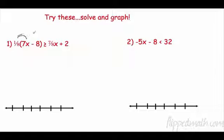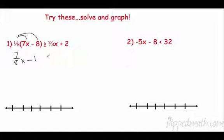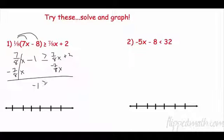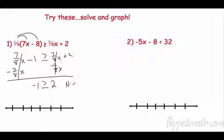I need to distribute 1/8. One-eighth times 7 is 7/8 x, and one-eighth times 8 is 1. So: 7/8 x + 1 ≥ 7/8 x + 2. Subtract 7/8 x from both sides — that cancels — leaving negative 1 ≥ 2. Is negative 1 greater than or equal to 2? No, that's not true. Since the answer is no, it's no solution.